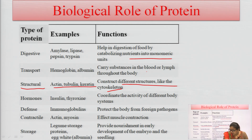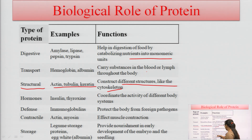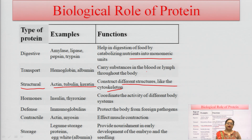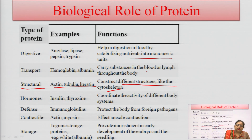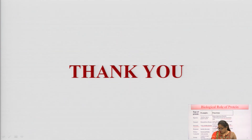Storage proteins include legume storage proteins and egg white albumin. Legume storage proteins provide nourishment in the early development of embryos and seedlings. Overall, these are the general biological sources and roles of proteins, because proteins show very vast functions in our body.